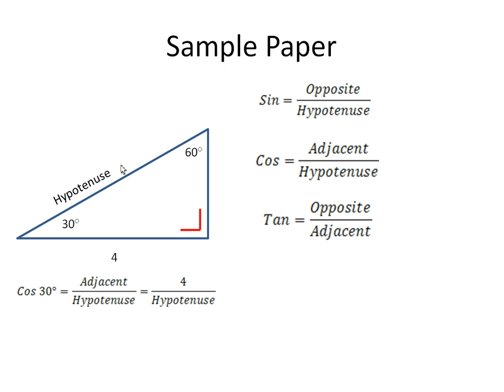So cosine 30 is 4 over the hypotenuse. What I can do is rearrange this, so the hypotenuse equals 4 divided by cosine of 30. When you do that in your calculator, you get 4.618.